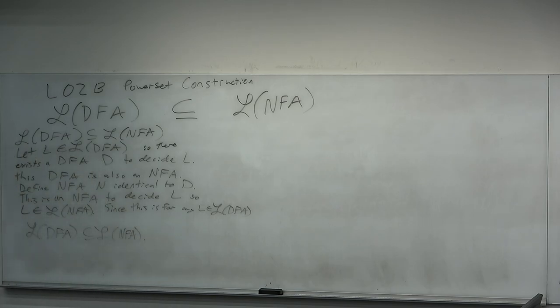Now, did we need to do all of that? Did we need to do any of that? No. But it's just sort of a structure of what the proofs look like. Take one element of one, so it's in the other, therefore it's a subset. That's how proofs work. Questions on this? We made a new NFA N that was just basically the same as the DFA. And then it's in it. Questions on this?